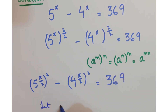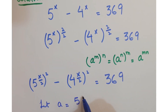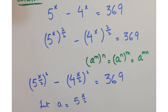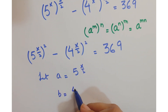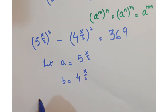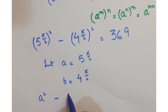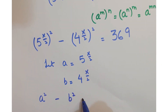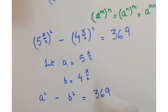Now let's assume that a equals 5 to the power x upon 2, and b equals 4 to the power x upon 2. So replacing this, you get a squared minus b squared equals 369.